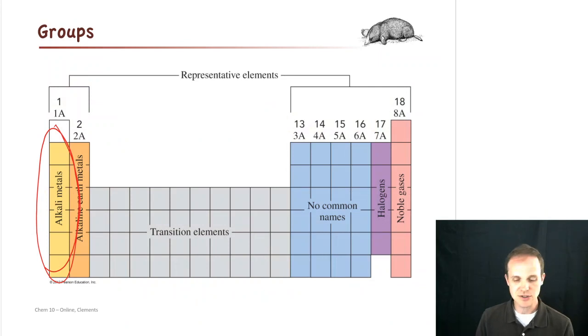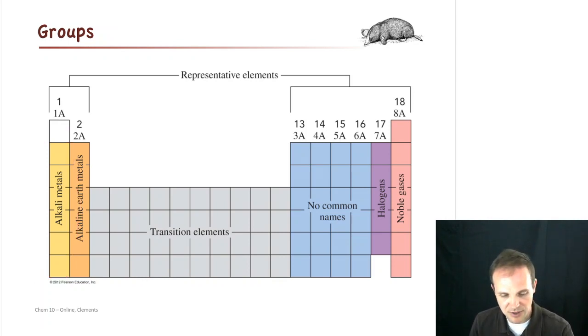So those are called the alkali metals. So if we ever talk about the alkali metals, we're talking about that group. Now, a group on the periodic table is a column on the periodic table. Now, why do we group them that way? Well, it turns out all the alkali metals have very similar chemical properties. If you dump them in water, they're reactive with water and they do pretty much the same thing. Not exactly the same thing, but that's how we group the periodic table. They're grouped by chemical properties.